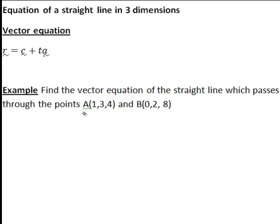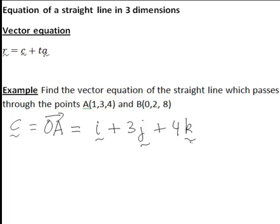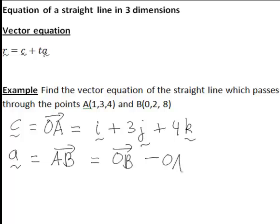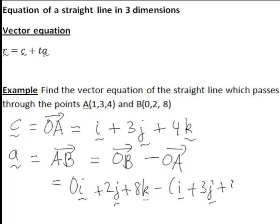To see how this works in practice, consider a straight line through the points A and B shown here. To find the vector c, this could be taken using either point. Here I'm going to let it be the position vector of point A, that is the vector OA, which will be i plus 3j plus 4k. Now since we're given two points on the line, to get the vector in the direction of the line, that will be the vector from point A to point B. The vector AB is worked out as OB minus OA, where OB is 0i plus 2j plus 8k, and OA is i plus 3j plus 4k. Hence a vector in the direction of the line a is negative i minus j plus 4k.